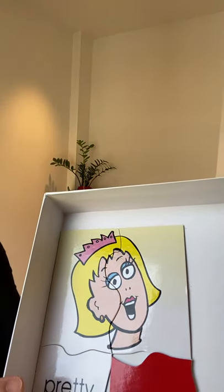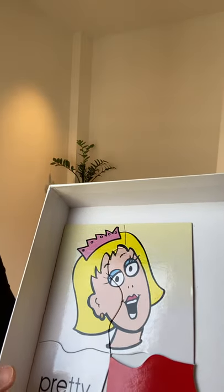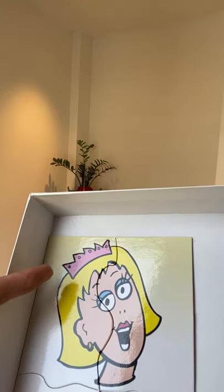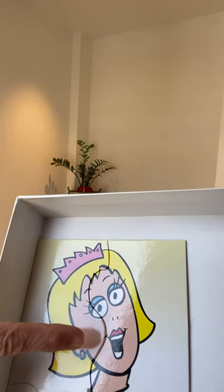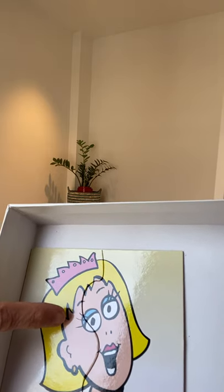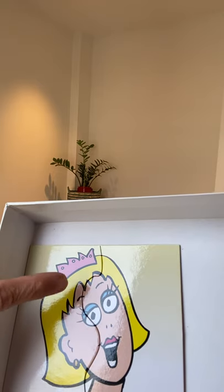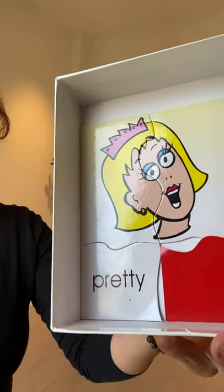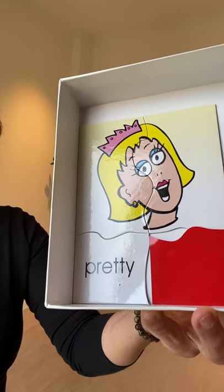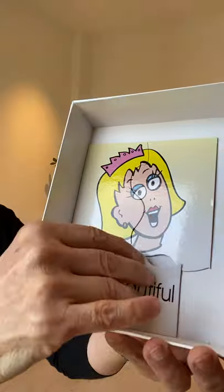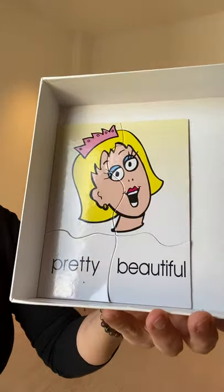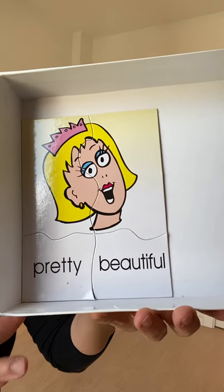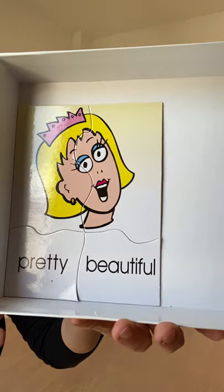Let's start with this one. We have an image of a woman — a female, possibly a girl. We don't know her age. She's wearing a tiara, lipstick, earrings, and possibly mascara on her eyelashes to make them very long. We could say that she is pretty, beautiful, or gorgeous.